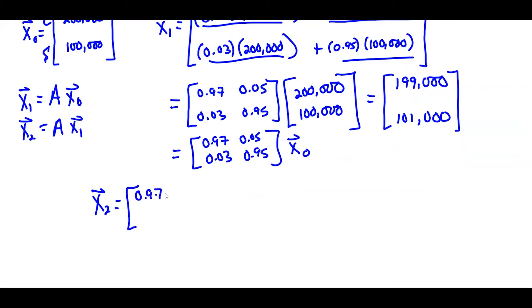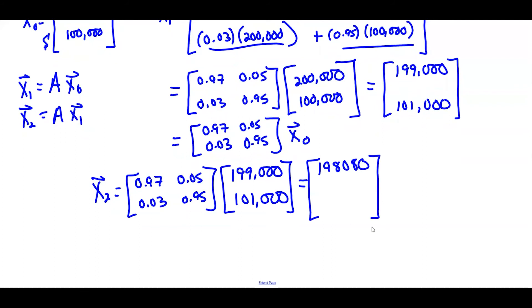Use the same matrix. And now I'm going to multiply by the new population vector. So again, I'll just use a calculator. I'm just using a handheld here. So I get 198,080 for the city. And 101,920 for the suburbs.